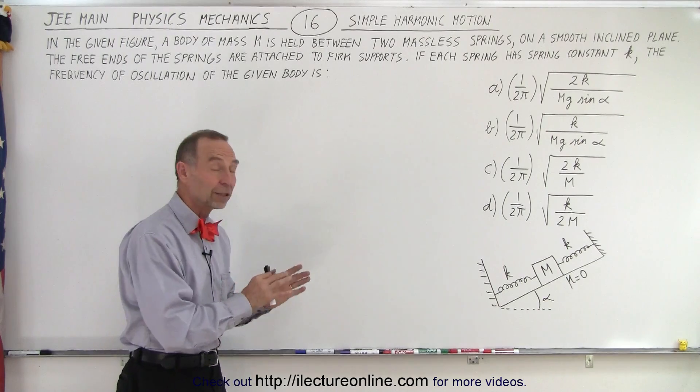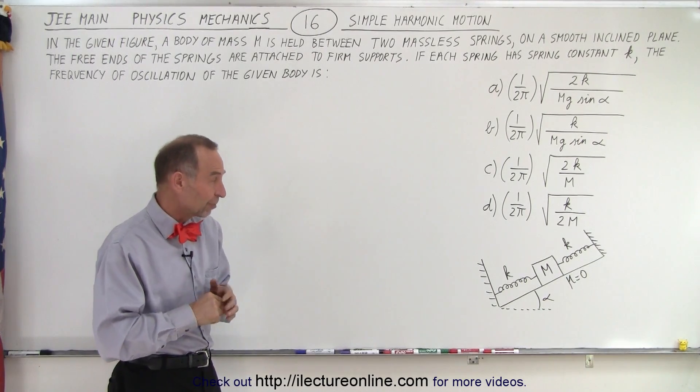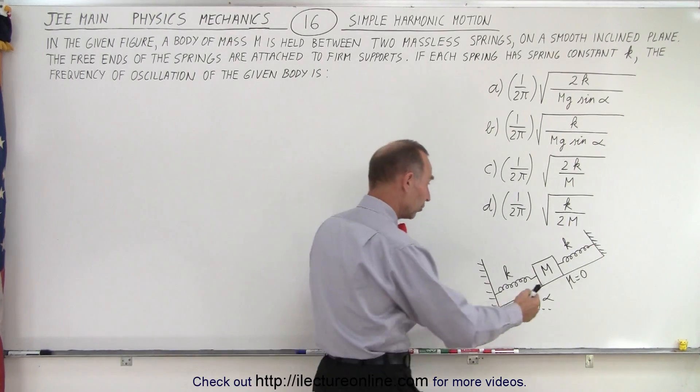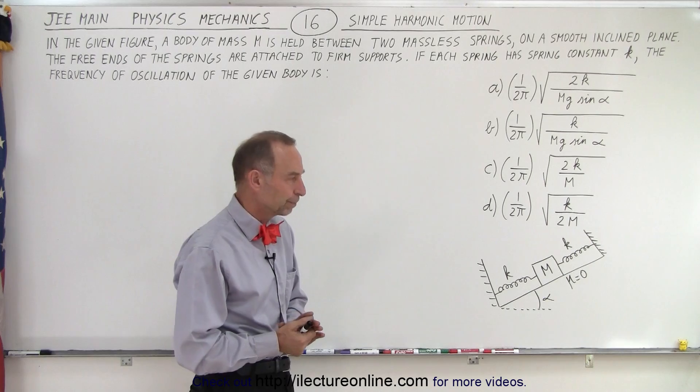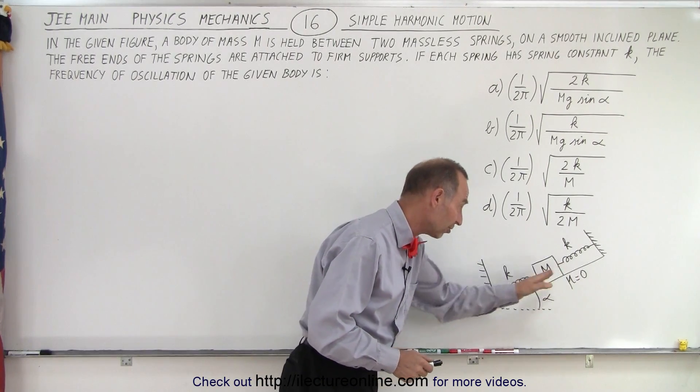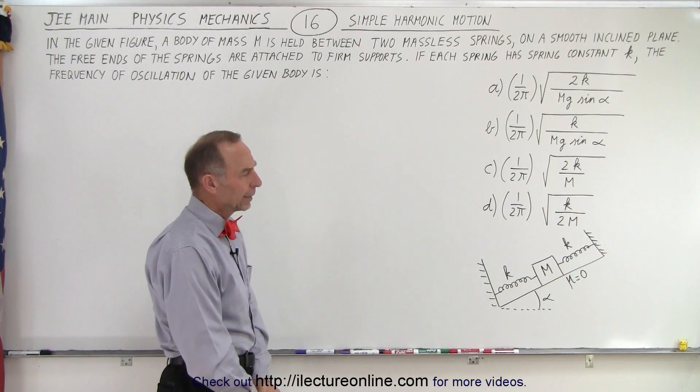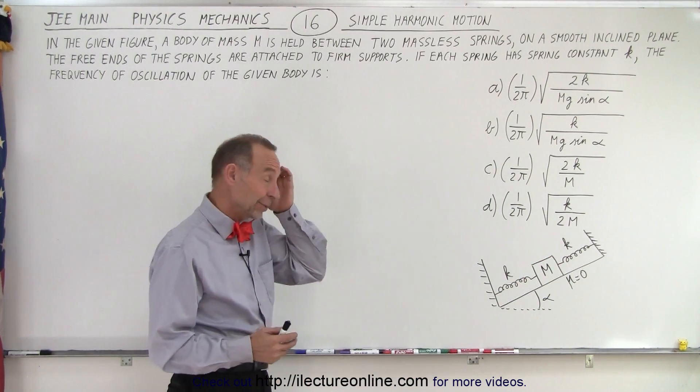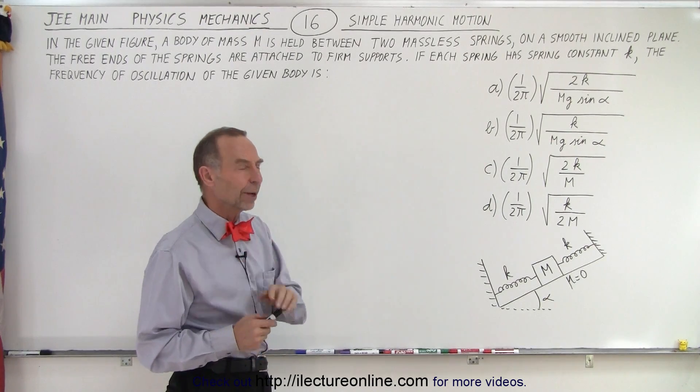So there are two things about this particular problem that may make it a little more difficult initially when you think about it. First of all, there are two springs, one on each side. Secondly, it's on an angle. Does that angle really matter? And also notice that there's no friction, there's no energy loss as it's sliding back and forth. But does that angle bother you? It did initially for me. Do we have to take that into account? But think about it this way.